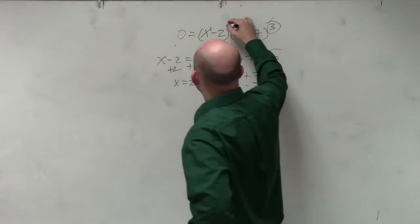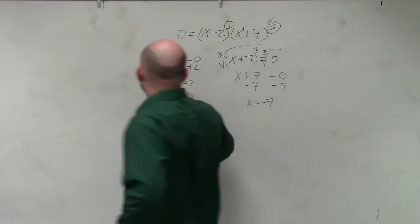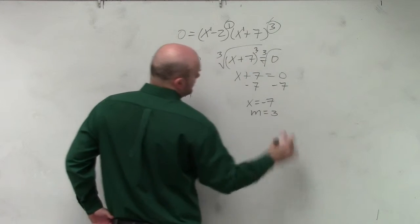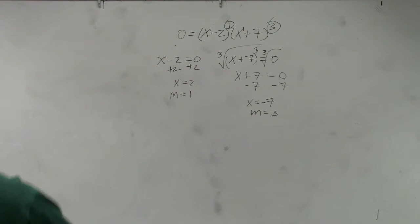And then you look at the power of each factor. Well, the powers of my factors are 1 and 3. Since both of my zeros have a multiplicity that is odd, we know that they're going to cross at both of those zeros. Correct? And that's it.